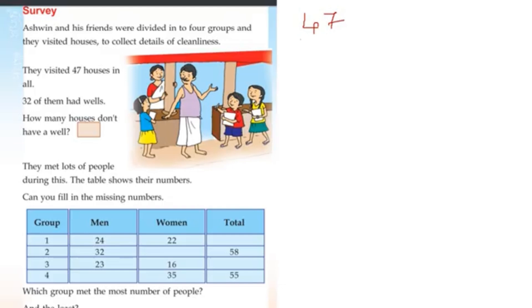Houses that do not have a well. Total houses: 47 minus 32. 7 minus 2 is 5, 4 minus 3 is 1. So 15 houses do not have a well.